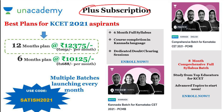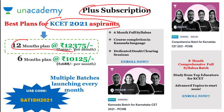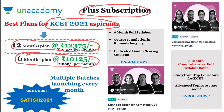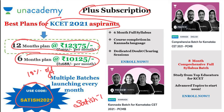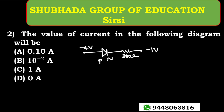It's my pleasure to introduce the Unacademy Plus subscription. There are best plans for Karnataka CET 2021 aspirants: a 12-month plan at rupees 12,375 and a 6-month plan at rupees 10,125. Use my code SATISH2021 to get an extra 10% off on the course fees. You can also follow my profile 'Satish TS' under Karnataka CET on the Unacademy platform.